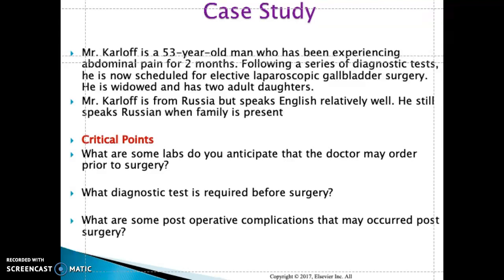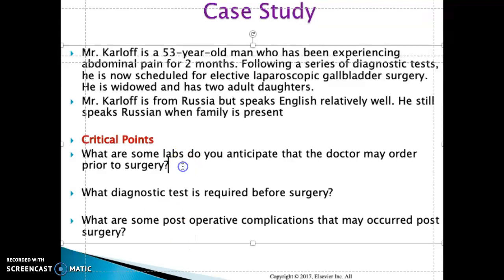A BUN and creatinine may be ordered because certain dye is used in surgery, and the doctor wants to assess the kidney's ability to clear that dye in order to prevent nephrotoxicity. Coagulation studies check the ability of the blood to clot; the doctor may order PTT (partial thromboplastin time) and PT. A blood glucose level may also be ordered to see the patient's baseline glucose. Additionally, an EKG may be ordered for patients with underlying cardiac issues to see their baseline cardiac rhythm.